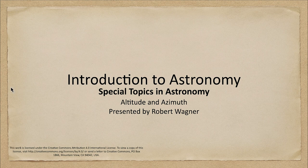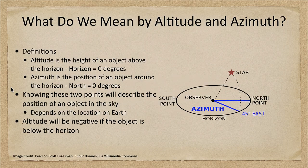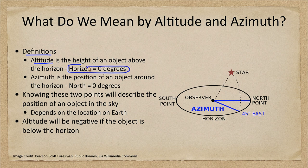So what do we mean by altitude and azimuth? Let's start out looking at the definitions. The definition of altitude is the height of an object above the horizon. If it is on the horizon, just rising or setting, that would mean its altitude is zero degrees.